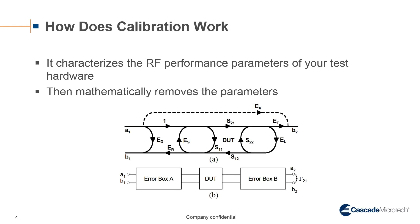But then there's all these other terms that are coming from your test setup, which is including E-sub-S, E-sub-R, E-sub-D, E-sub-L, E-sub-X, and E-sub-T, which are six terms for your forward measurement error box. Once you get what these parameters are, you can then mathematically remove these from your final measurements to look at the performance of just your device.